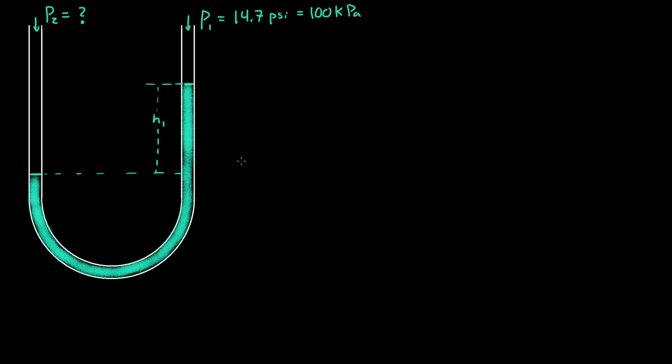This is a quick video over manometers. All a manometer is is a tube bent in a U-shape that has a fluid in it, usually a very heavy fluid - usually mercury. But in our case we're going to use water. And you use the height difference of that fluid to calculate the pressure difference.